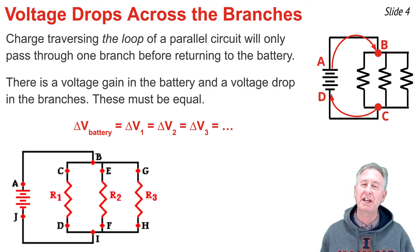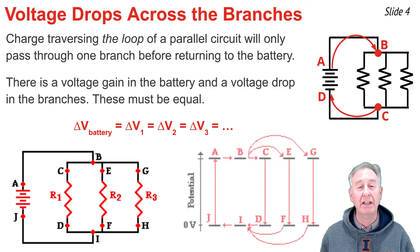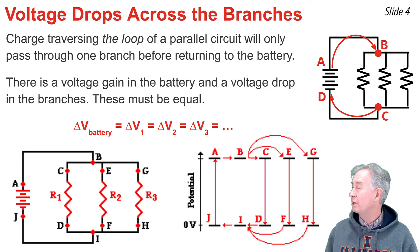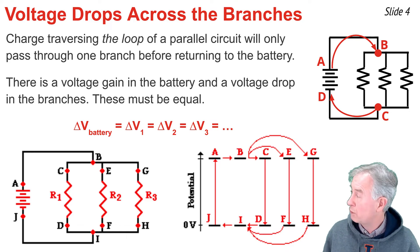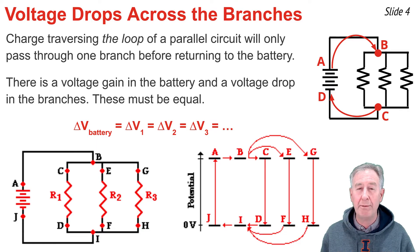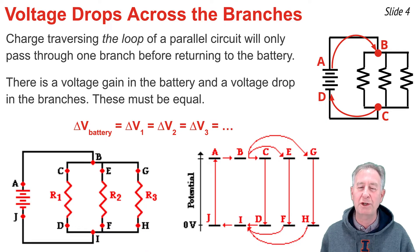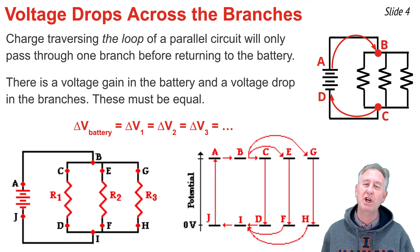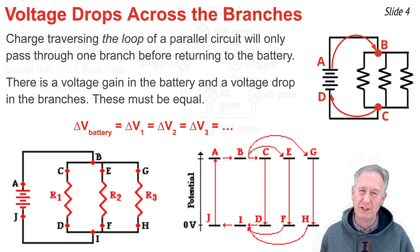We often represent these ideas with an electric potential diagram. In the diagram for this circuit, A, B, C, E, and G are all at high potential, and then the drop occurs as charge goes through the resistors, such that D, F, H, I, and J are at the low potential location.